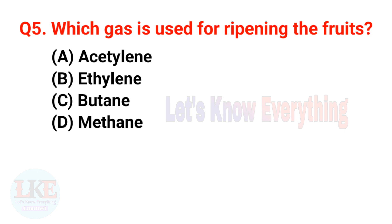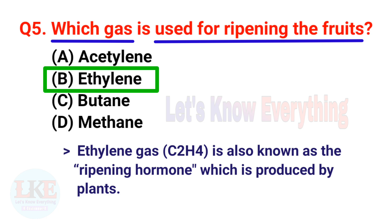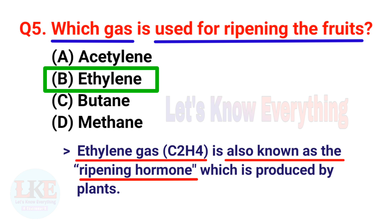Question 5: Which gas is used for ripening fruits? A) Acetylene, B) Ethylene, C) Butane, D) Methane. The right answer is option B, Ethylene. Ethylene gas (C2H4) is also known as the ripening hormone, which is produced by plants.